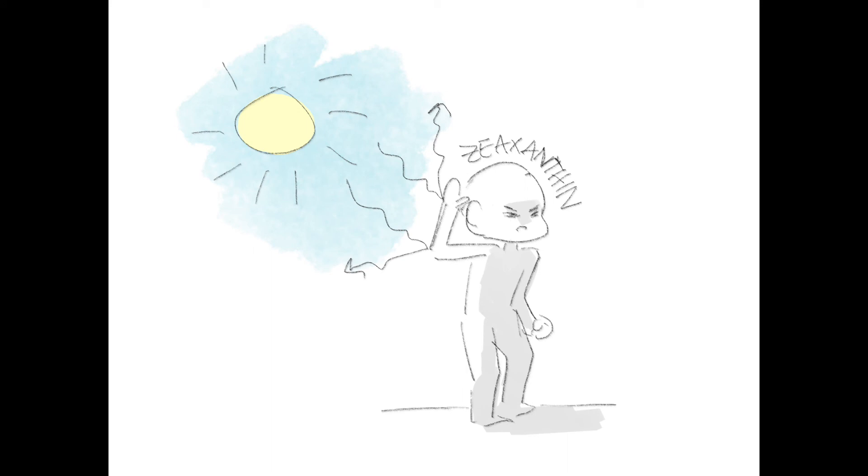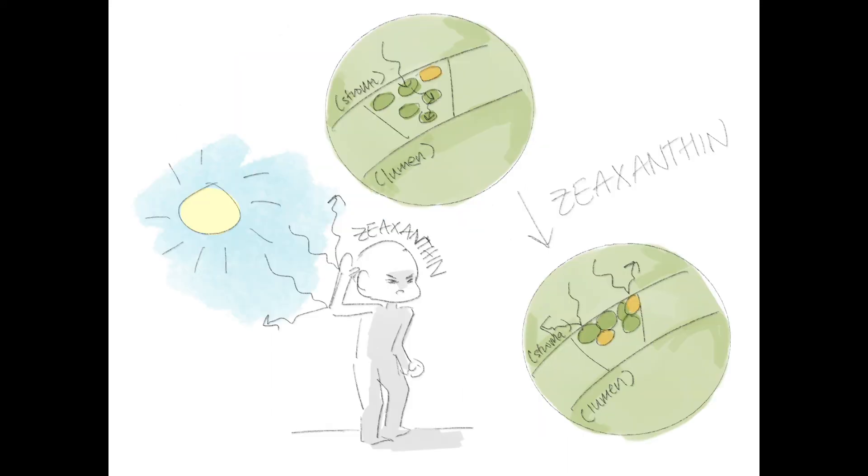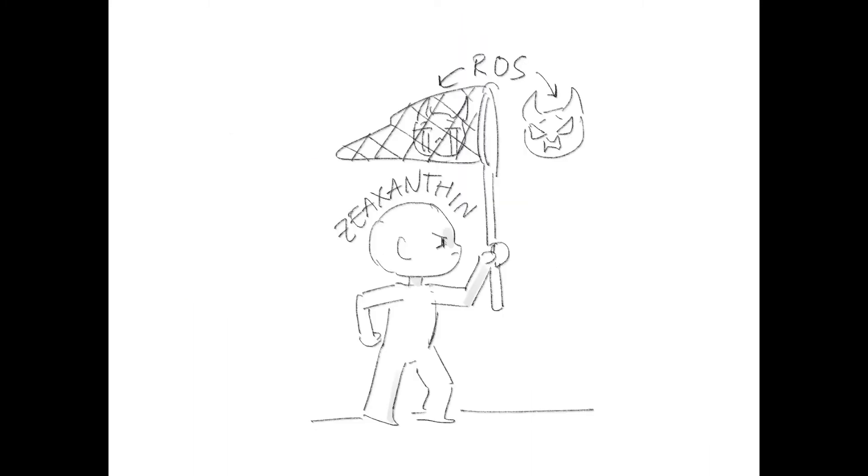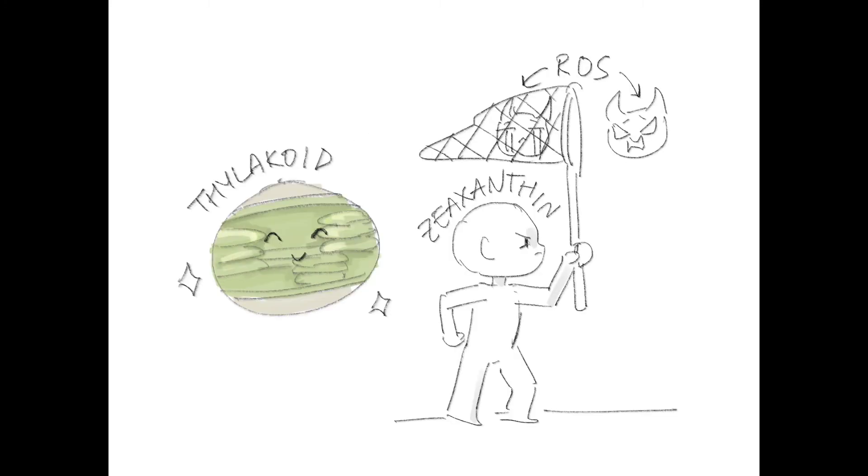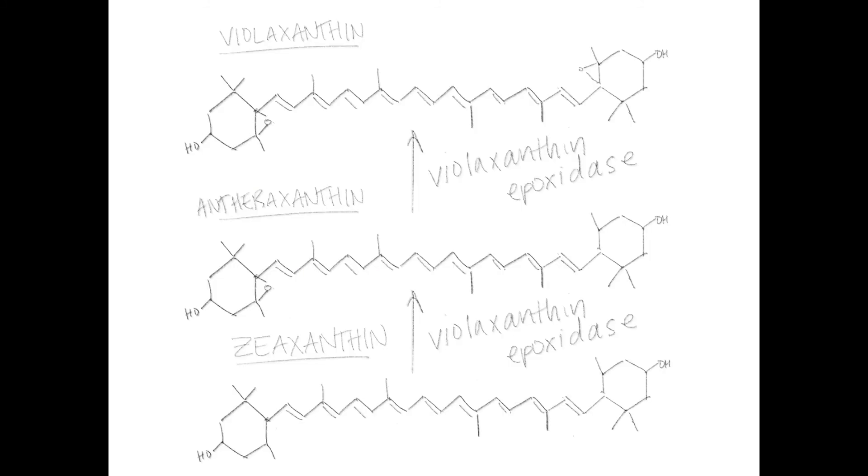Zeaxanthin causes structural changes in the light harvesting complexes of photosystem II such that energy transfer to P680 is reduced and any excess energy is dissipated as heat. Zeaxanthin also has antioxidant properties and scavenges ROS within the thylakoid to protect against ROS damage. As light stresses are reduced, zeaxanthin is converted back to violaxanthin by violaxanthin epoxidase in the thylakoid stroma.